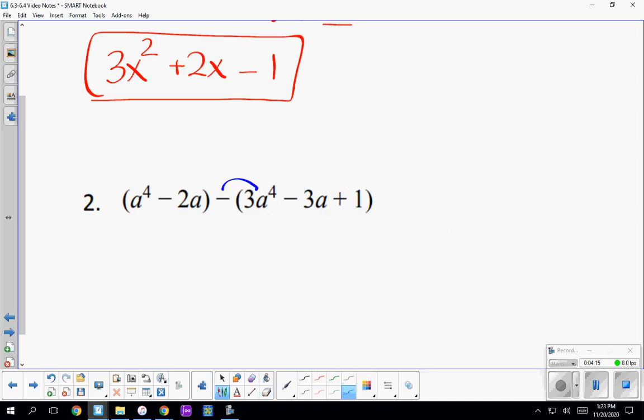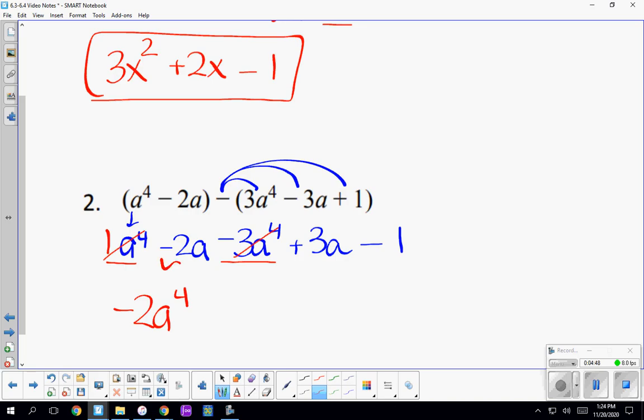It does say subtracting, so I like to think of it, okay, we're going to subtract 3a to the 4th. And then we're going to subtract a negative 3a. And when we subtract a negative 3a, that becomes a positive, so we're really just adding 3a. And then finally I'm going to subtract a positive 1. So I'm going to start with my a to the 4th. I have 1a to the 4th minus 3a to the 4th, or negative 2a to the 4th. Then I'm going to have a positive 1a. And then finally my constant, negative 1. So I'm just combining like terms and my answer is in standard form.